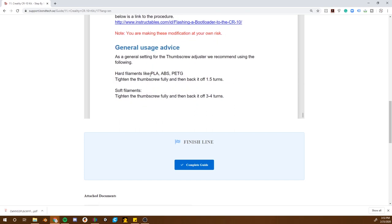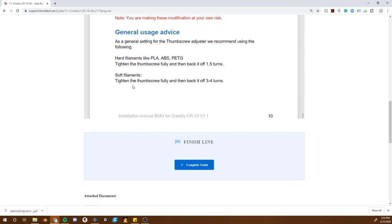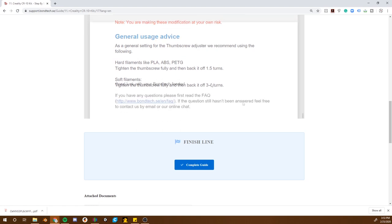Hard filaments like PLA, ABS, PETG. Tighten the thumbscrew fully, and then back it off one and a half turns. Soft filaments, tighten the thumbscrew fully, and then back it off three or four turns. Good luck.